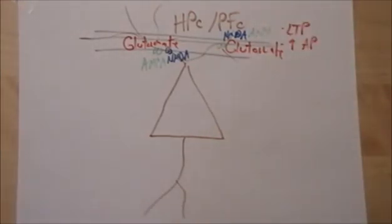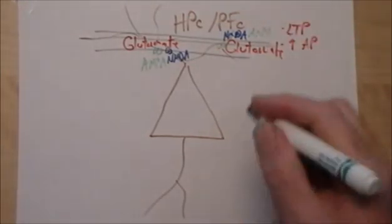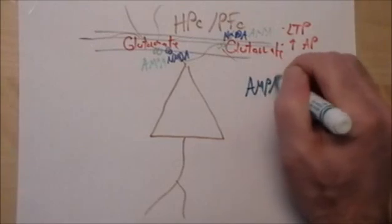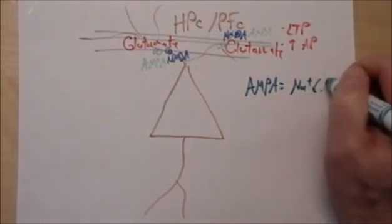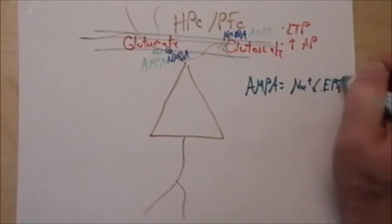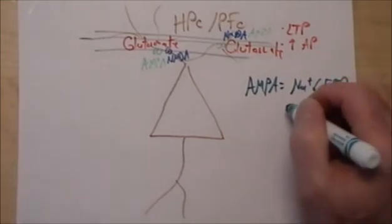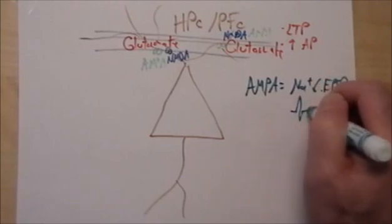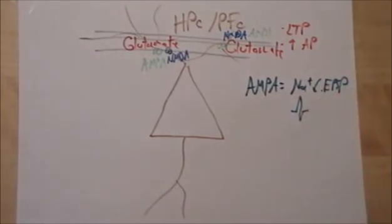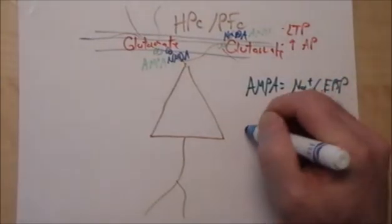AMPA's main function is to allow sodium to come in, leading to depolarization, so excitatory post-synaptic potentials. That can cause an increase in the incidence of action potentials. But it also sets up depolarization for the NMDA receptor.